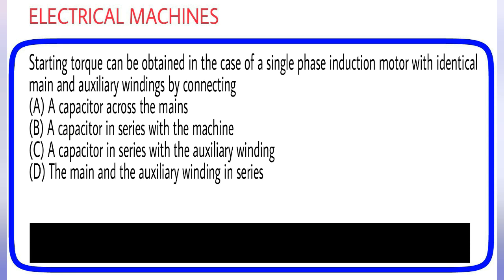Starting torque can be obtained in the case of a single phase induction motor with identical main and auxiliary windings by connecting: (A) A capacitor across the mains, (B) A capacitor in series with the machine, (C) A capacitor in series with the auxiliary winding, (D) The main and the auxiliary winding in series. Answer is option C.